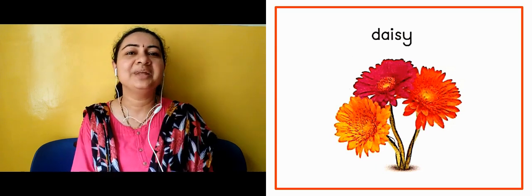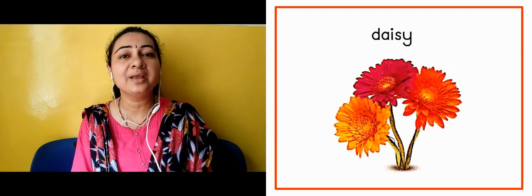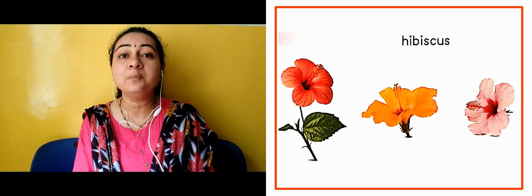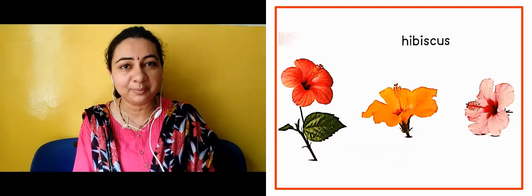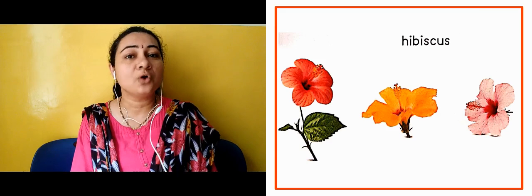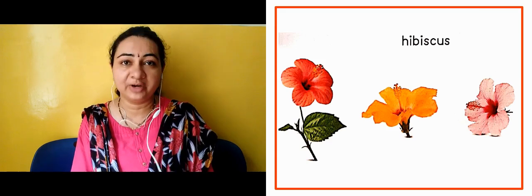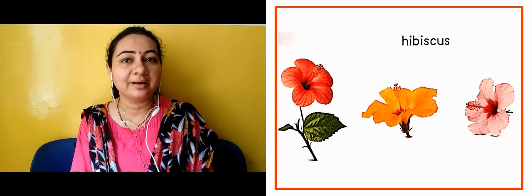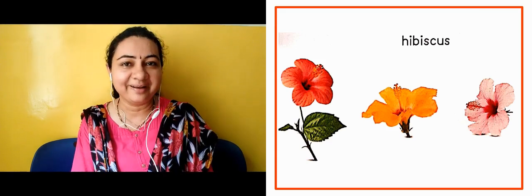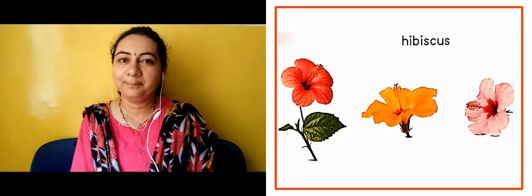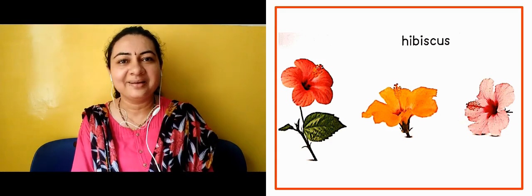Now the next slide is showing us hibiscus. It is also of different colors — here the color is red color, yellow color, pink color.